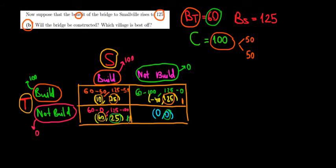And if we go in the other case, when S does not build, what would be the choice of T? Minus 40 is worse than zero, so he would go for not building either. Now, what is the Nash equilibrium in this question? We can see that it is build versus not build, meaning that Smallville is going to build a bridge and Tiny Town is not going to build a bridge.